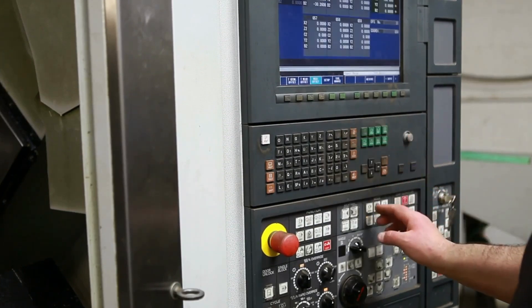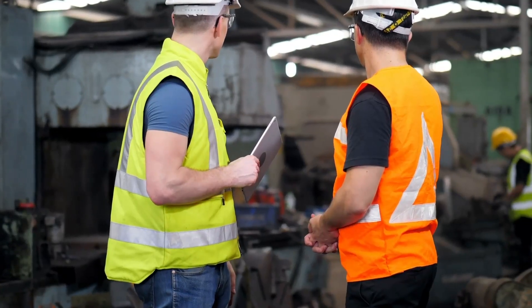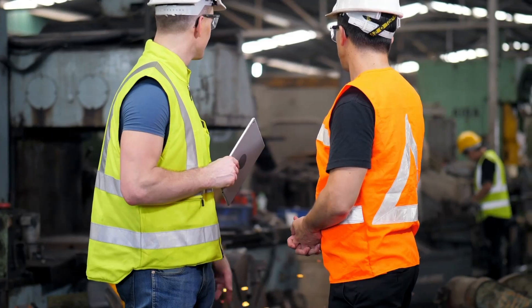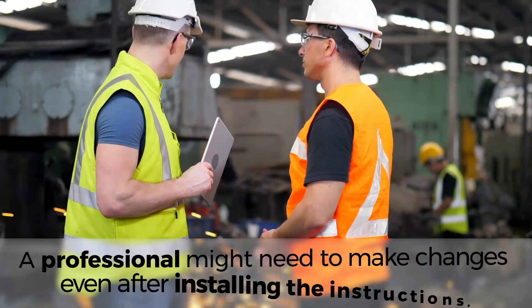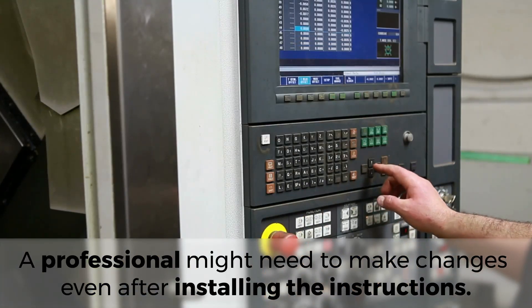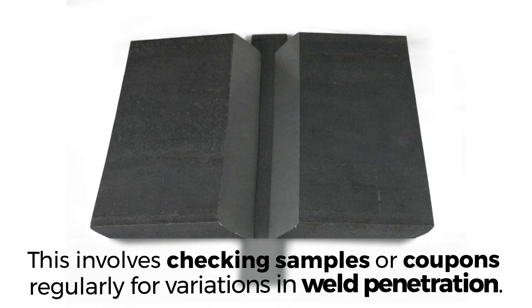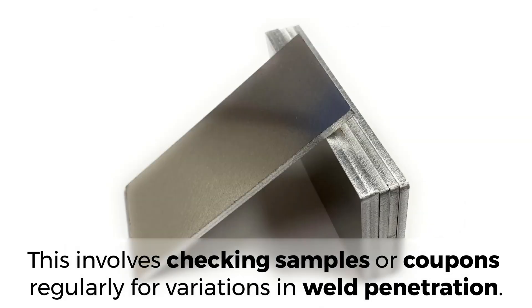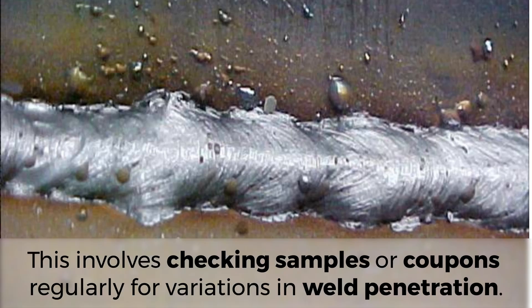Even though this process is very automated, engineers are still needed to run the machine efficiently. Variable restrictions mean that a welder may need to make corrections even when the welding parameters have been entered into the welding equipment. This involves checking samples or coupons regularly for variations in weld penetration.